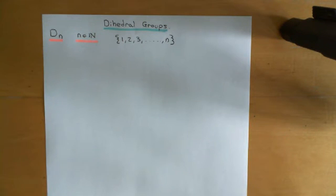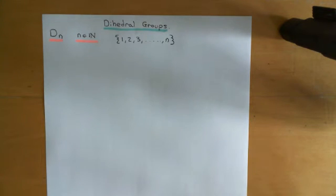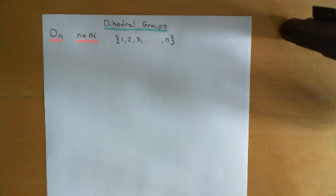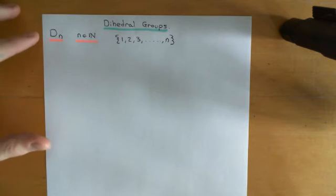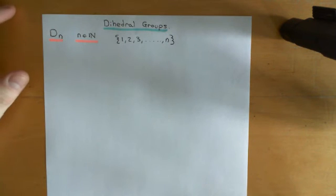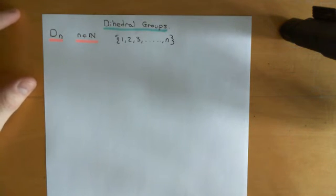We saw when we looked at the symmetric groups S_n that they contain absolutely all permutations of this set. We then saw with the cyclic groups C_n that you only have symbols representing the cyclic permutations of these sets. The dihedral groups D_n are in between the cyclic and symmetric groups. Let me describe how you can create the set permutations which are going to be represented in these dihedral groups D_n.